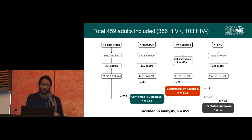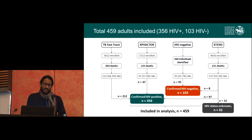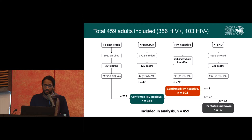From the TB Fast-Track study we did 212 verbal autopsies — all HIV-positive adults. From the X-Factor study we had 47 HIV-positive adults. From the X-TEND study we had 137 verbal autopsies total: 8 HIV-negative and 97 HIV-positive. Among the 266 HIV-negative individuals we found, we did 95 verbal autopsies, leaving us with a total sample for analysis of 459 adults.